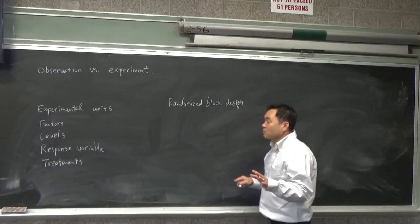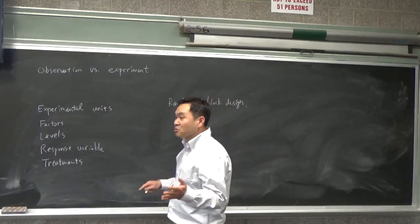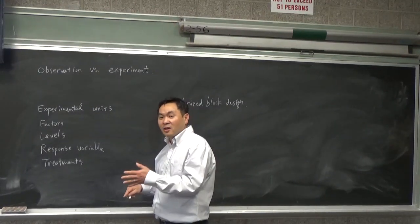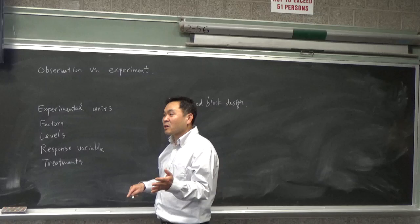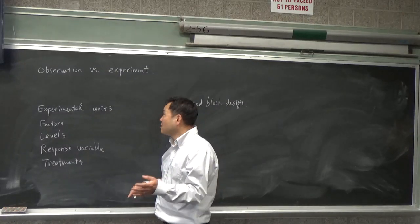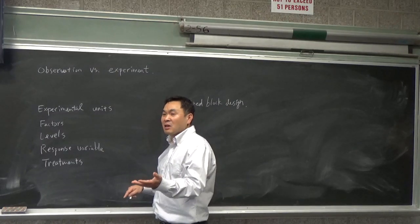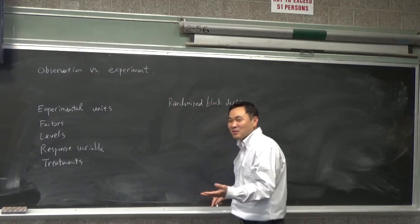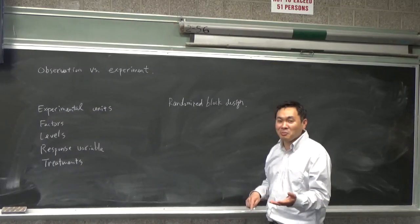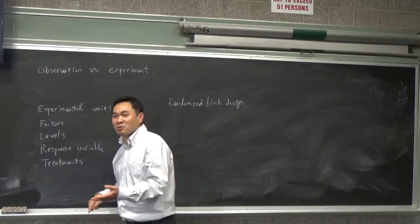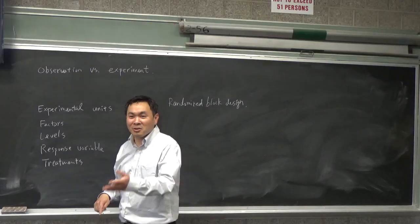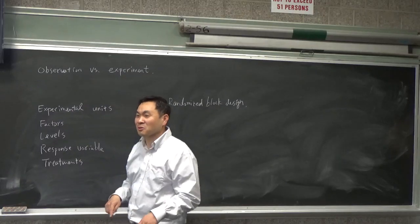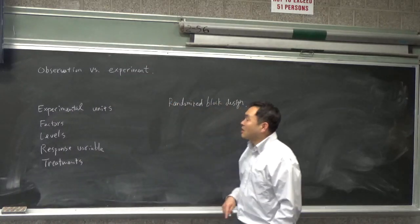So for example, if you wanted to know whether people who have had COVID has a lower lung capacity or something, you can't make some people have COVID. That would be unethical, right? So you can't do an experimental study with that. Rather, all you can do is you have to just go to a hospital and measure people who are infected, their lung capacity or something. So that's observation.